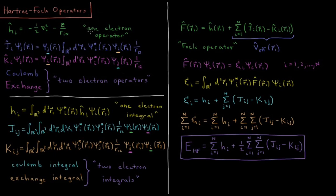To start off, our simplest operator is called the one-electron operator. For every electron indicated by index i, electron i has a one-electron operator h, which is equal to its kinetic energy operator plus its potential energy operator that attracts it to the nucleus. So minus one-half del squared i — the kinetic energy of electron i — minus the charge of the nucleus over the distance from the electron to the nucleus. This is the one-electron operator, which gives us the one-electron energy.